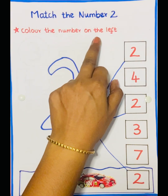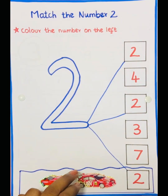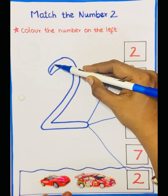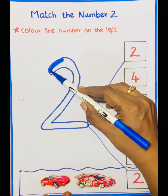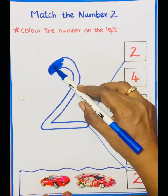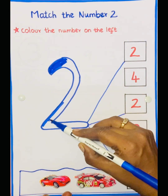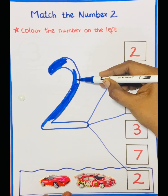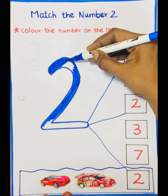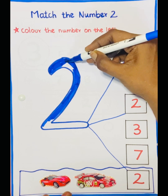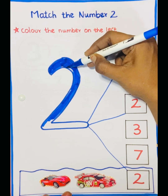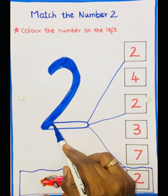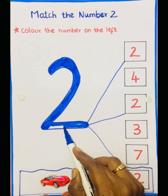Then color the number 2 on the left. See, this is your right side and this is your left side. So we have to color the number 2 on the left. The number 2 on the right side, and the number 2 on the left.